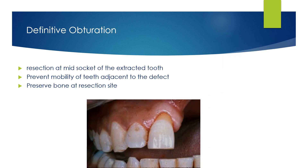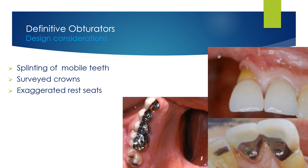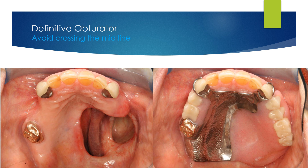To prevent mobility of teeth adjacent to the defect, it is recommended during surgery to perform a mid-socket resection, which preserves the bone around the remaining tooth adjacent to the defect. The presence of teeth enhances the prosthetic prognosis, and effort should be made to maintain their longevity. In some cases, teeth adjacent to the defect should be splinted together, and surveyed crowns should be used with exaggerated rest seats. To achieve better retention and stability, it is highly recommended to avoid crossing the midline by leaving more anterior teeth and at least one molar in the back.